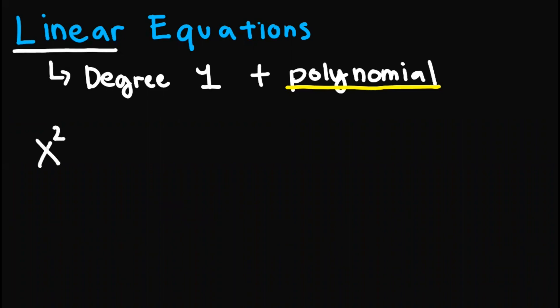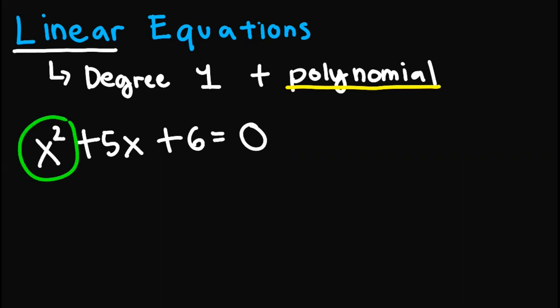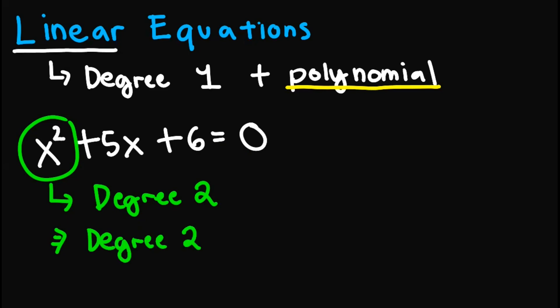Let's have x squared plus 5x plus 6 equals 0. This implies that this term has a degree of 2. And since the degree of the whole polynomial is determined by the highest degree of one of its terms, we can conclude that the degree of this polynomial is 2 and not 1. Thus, this one is not a linear equation.